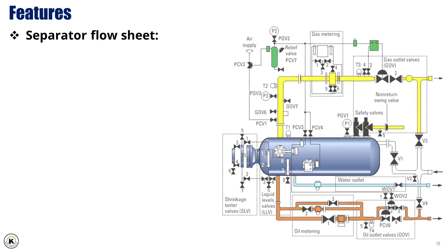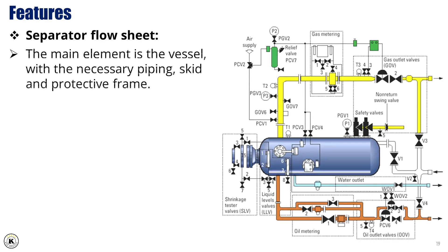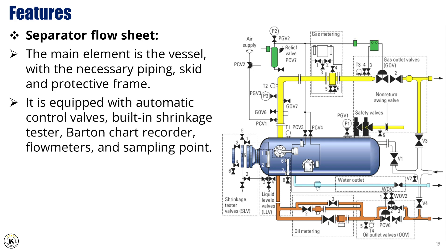The main element of the separator is the vessel, with the necessary piping, skid and protective frame. It is also equipped with automatic control valves, a built-in shrinkage tester, Barton chart recorder, flow meters and sampling point.